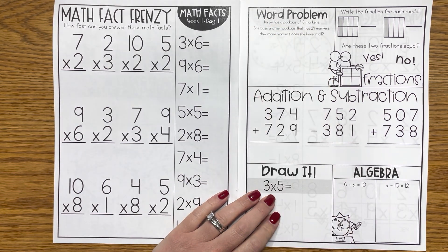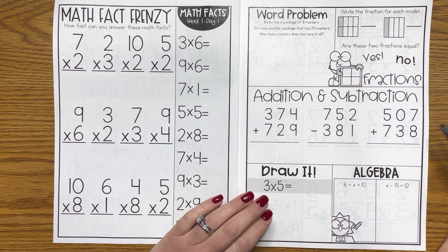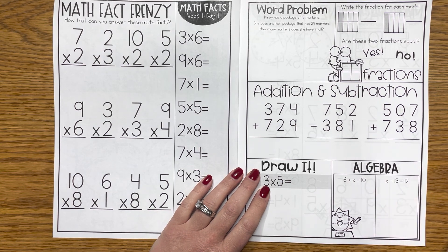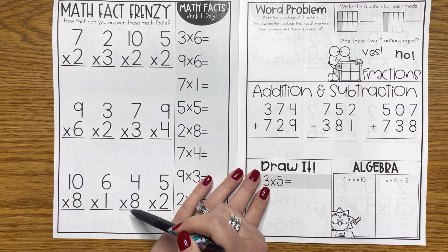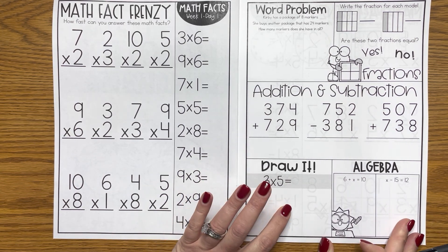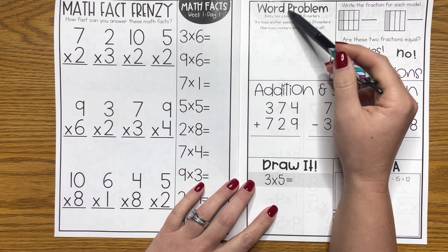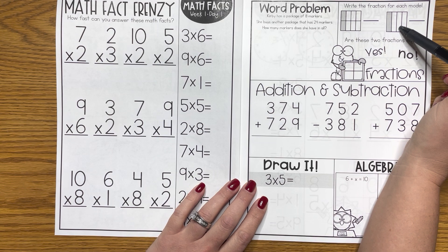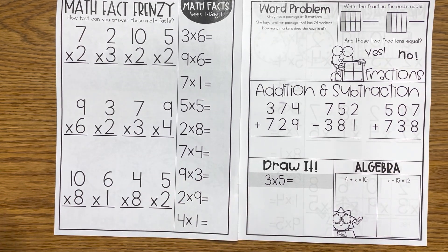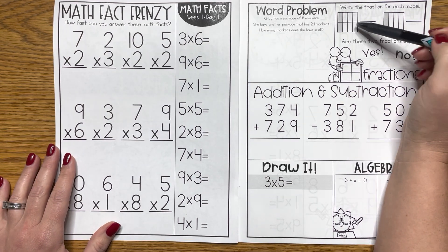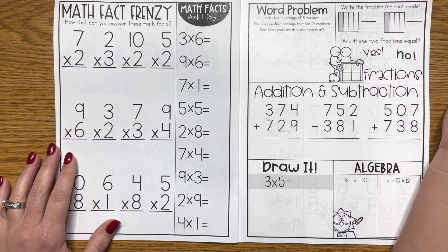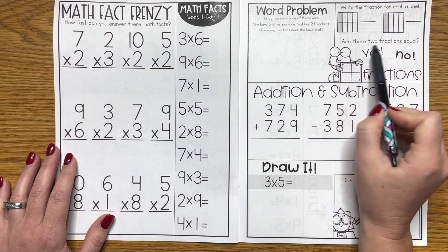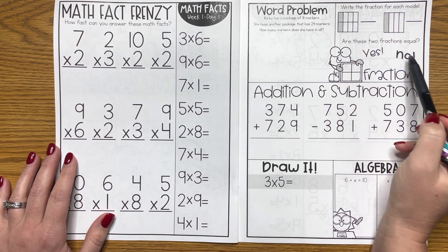We do that every single day. We call it our math fact frenzy, and we just try to do them as fast as we can. On this side of the page, we'll have a word problem. Early on, there are a lot of addition and subtraction, but as the kids have had a chance to practice multiplication and even division in our draw it section, we'll throw those in as word problems as well. We also work on fractions because I think kids can do this, it's just sometimes intimidating. They might write like 2 over 6 instead of 2 over 8. We talk about what is a numerator, what is a denominator, what do those numbers tell us, and then we decide are those two fractions equal and we circle yes or no.